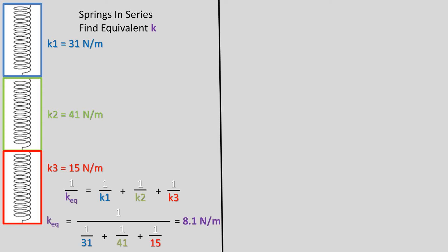We can rearrange this to get what we are solving for, k equivalent to one side, and plug in our values. We get an equivalent spring constant of 8.1 newtons per meter. This value should always be less than the lowest spring constant value in series.